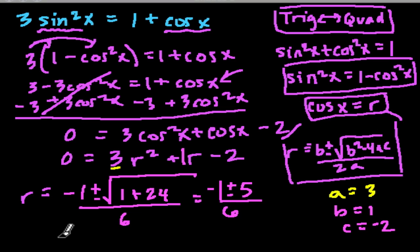So r can have two values. r could be, in the first case, negative 1 plus 5. Negative 1 plus 5 is 4, and 4 over 6 is 2 thirds. Or r could be negative 1 minus 5 over 6. What is negative 1 minus 5? That's negative 6, and negative 6 over 6 is just negative 1. So this is going to be helpful to us. We have r equals negative 1 or r equals 2 thirds.